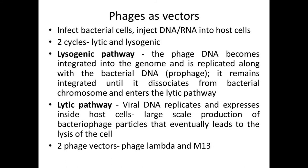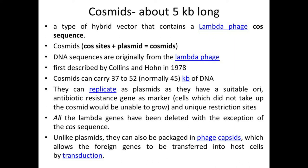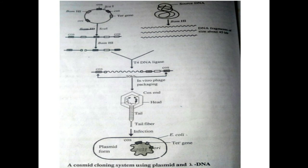The next type of vectors are cosmids — hybrid vectors containing plasmid sequence as well as lambda phage sequence. We take a part of lambda phage, link it with a plasmid, and design a new artificial vector. The DNA sequences are originally taken from lambda phage and were first described by Collins and Horne in 1978. The advantage is that they can carry larger sizes of DNA — around 37 to 52 kilobases of foreign DNA.